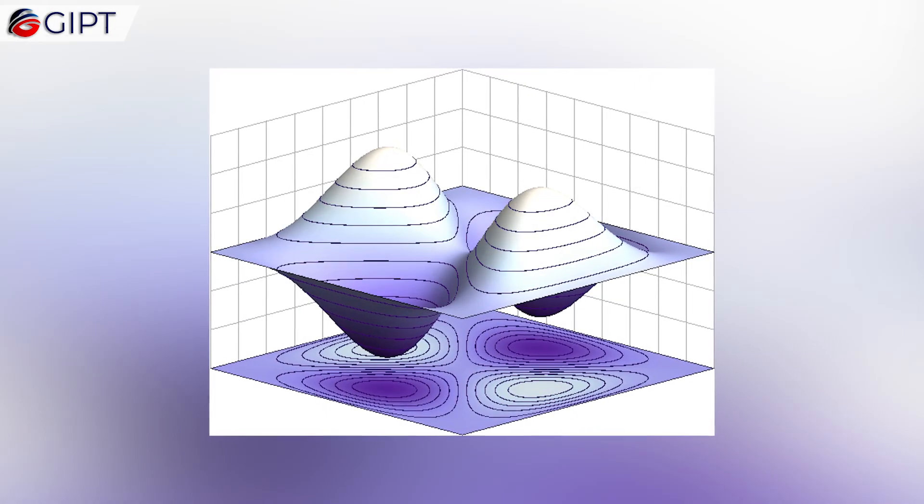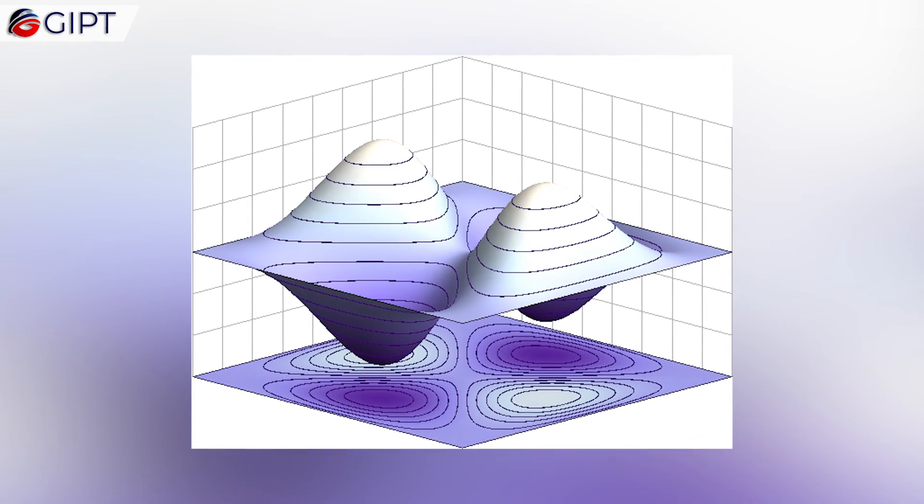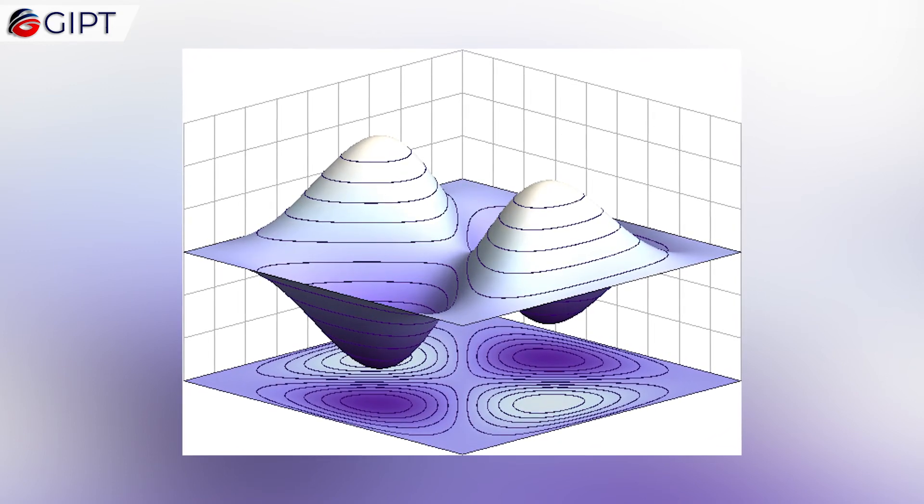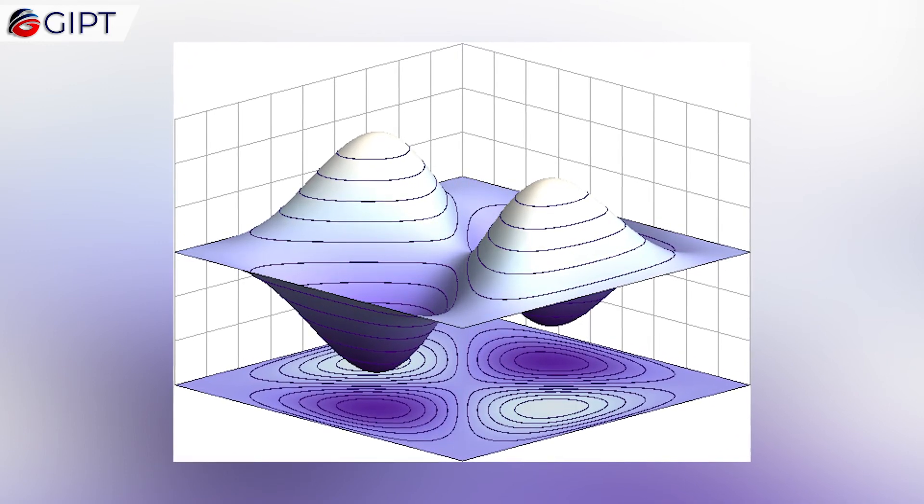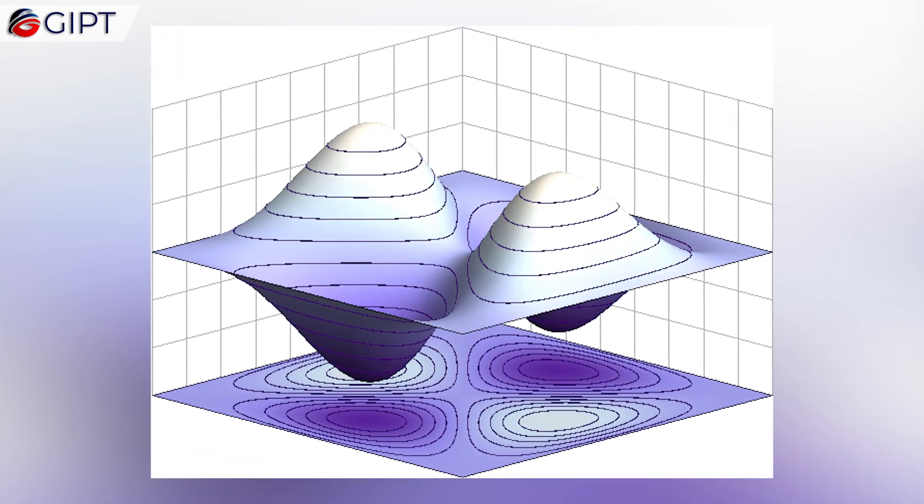Even the physicists who study quantum mechanics are the first to tell you that they don't fully understand it. But we're getting closer and closer to proving that quantum mechanics is real. So Einstein's failure to accept the theory may become his biggest blunder yet.